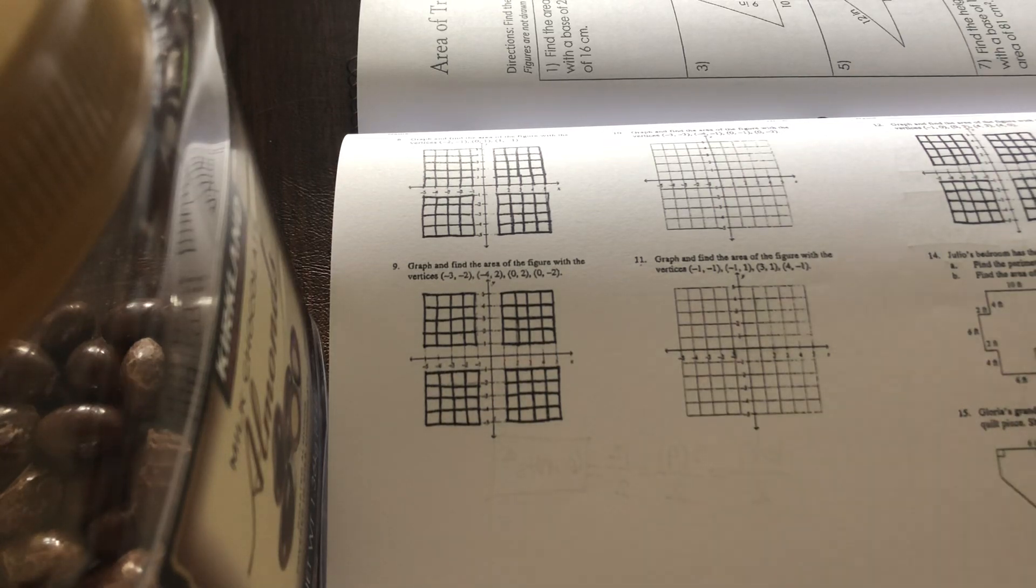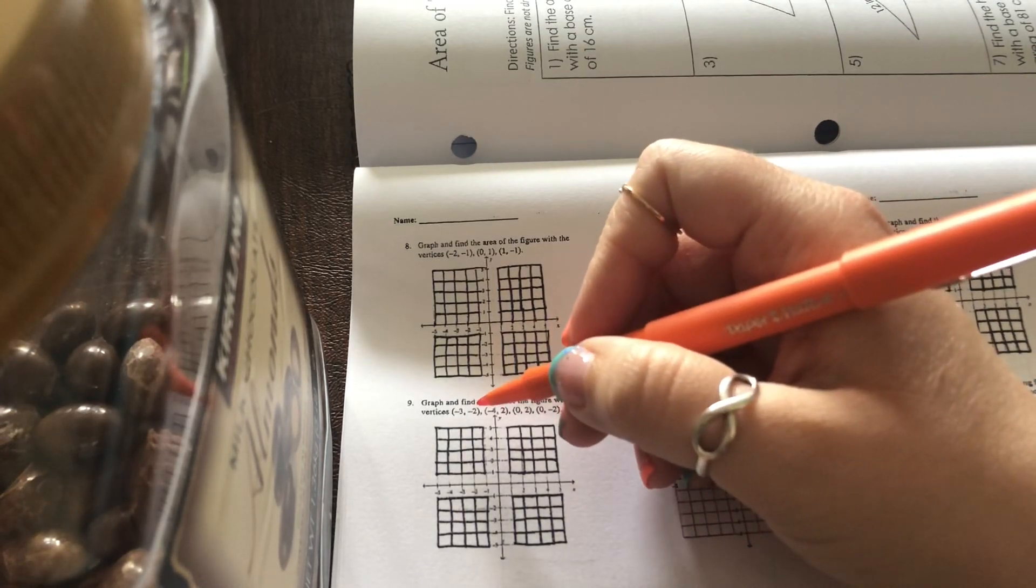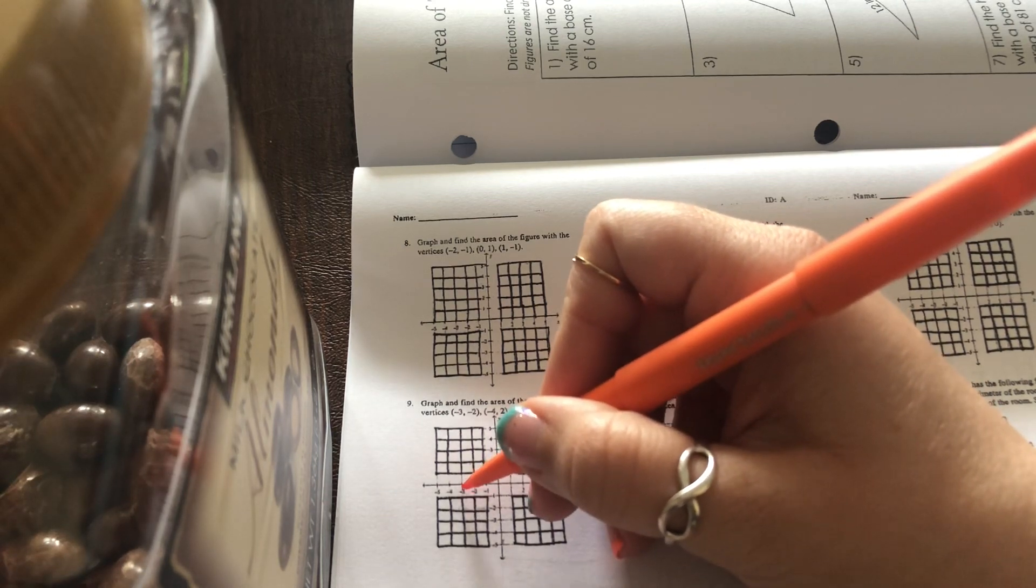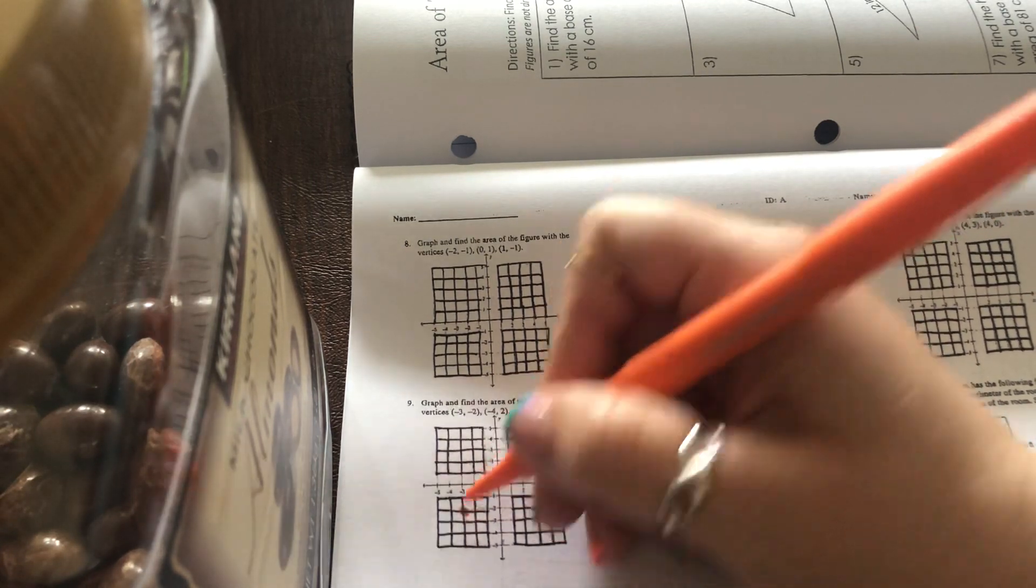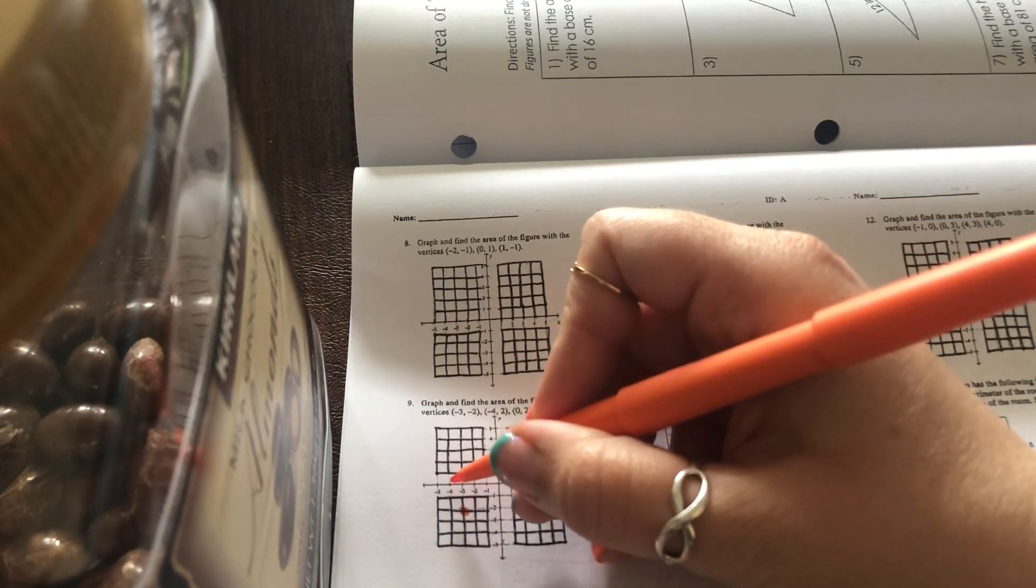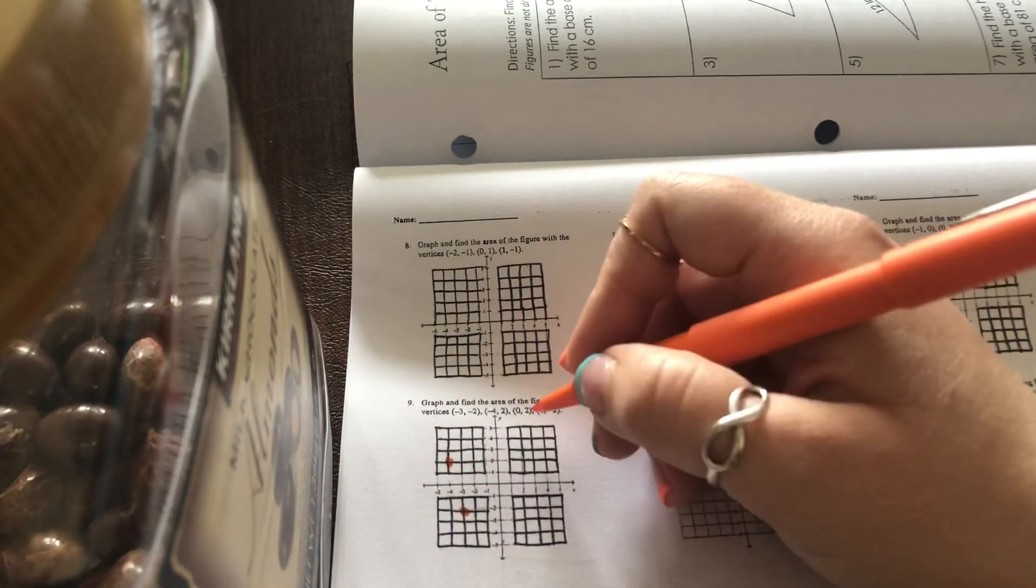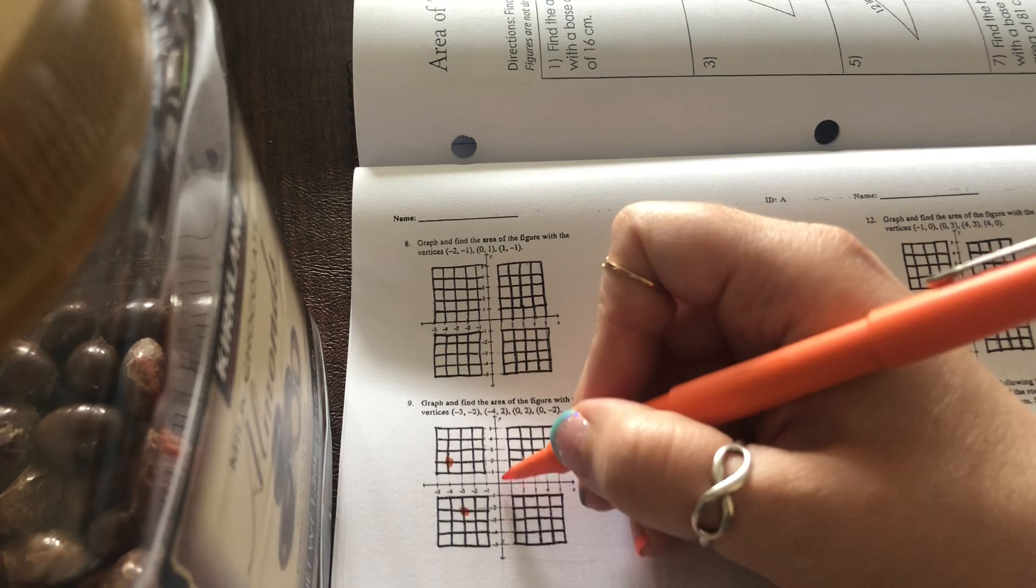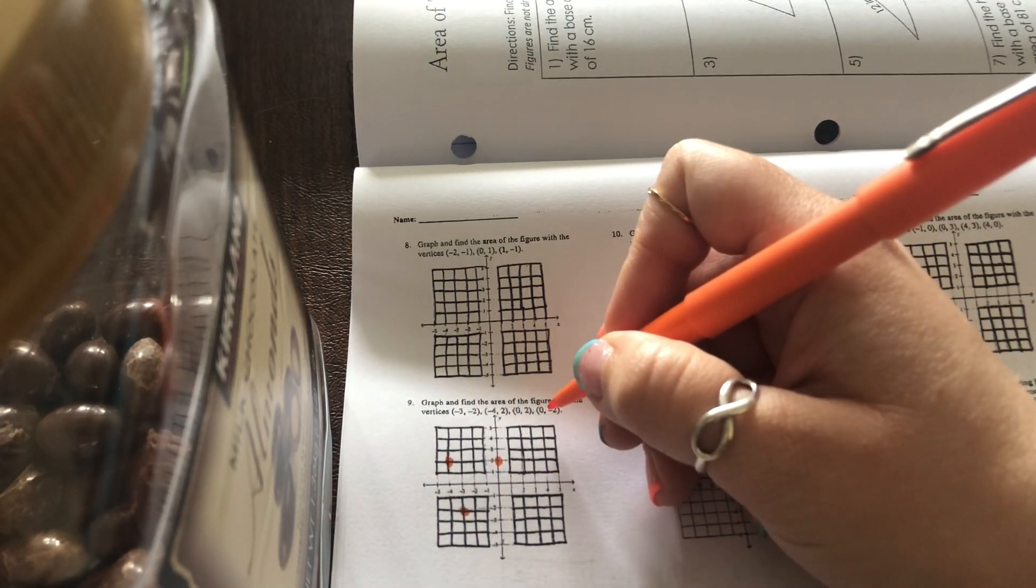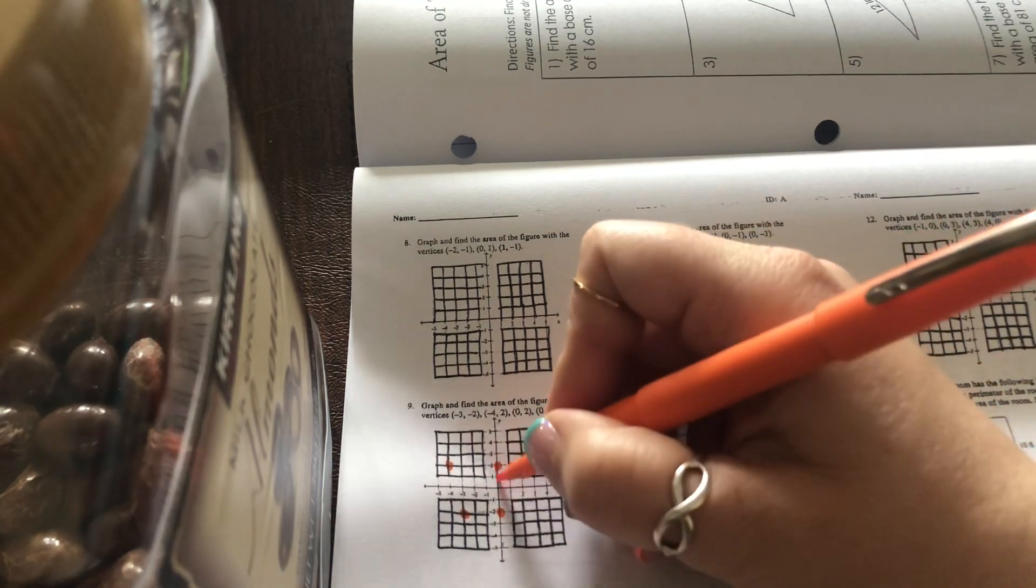Number nine, if I go ahead and graph these, that says negative three, negative two. So I'm going to go left one, two, three, and then down one, two. There's my first point. Then left four, one, two, three, four, and up one, two. This is zero, two. So go over nothing, up two. And then this one is zero, negative two. So over nothing, down two. Go ahead and connect those.